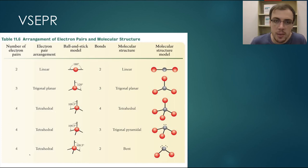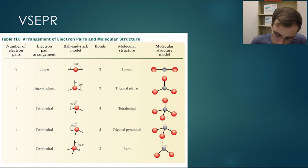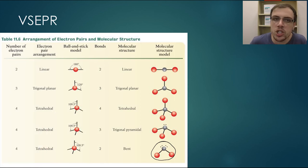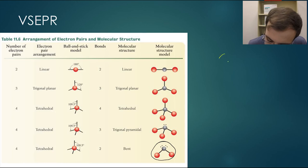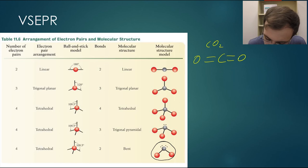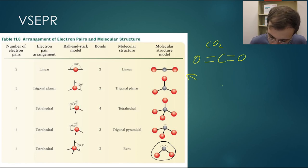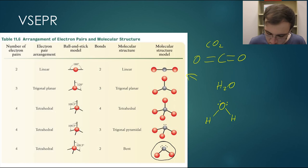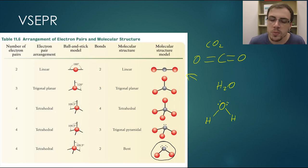If we look at our example of water, water is bent. I want you to pause this video and tell me: why is it that the structure of carbon dioxide is linear, whereas H₂O is bent? Why is CO₂ linear and H₂O bent?